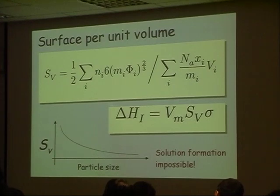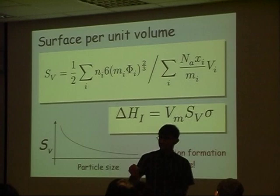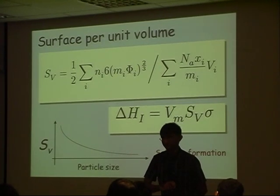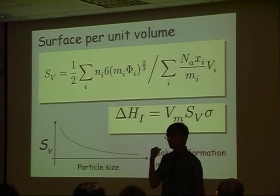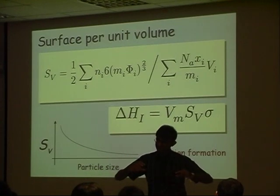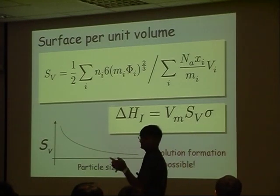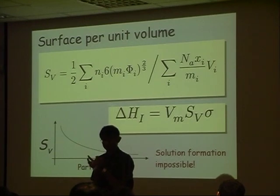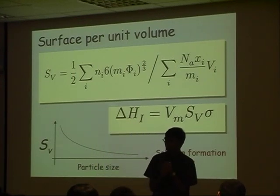When we take the surface energy term into account, the theory predicts that by breaking particle size down to smaller and smaller levels, this surface energy term becomes so large that solution formation is impossible. This completely contradicts Tom Seng's atom probe experiment, which demonstrated that mechanical alloying produces a true solution. So either something is wrong with the experiment, or the theory is too simple. I think in this case the experimentalist is right.